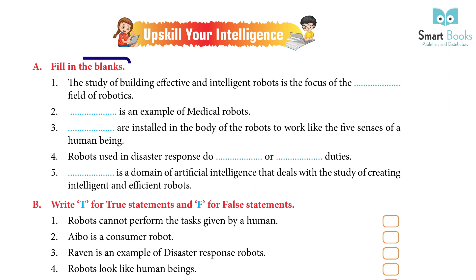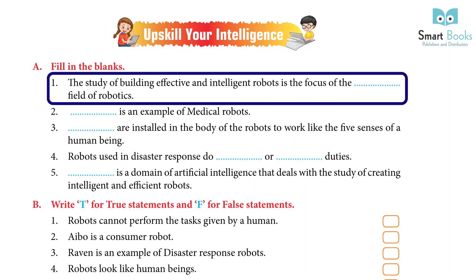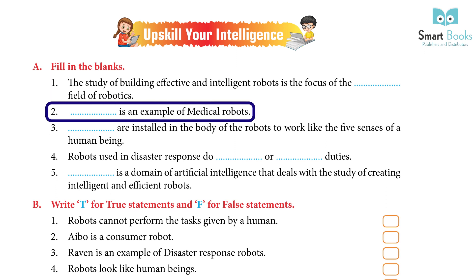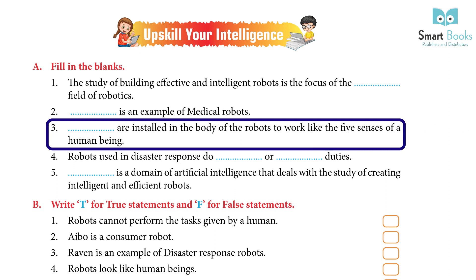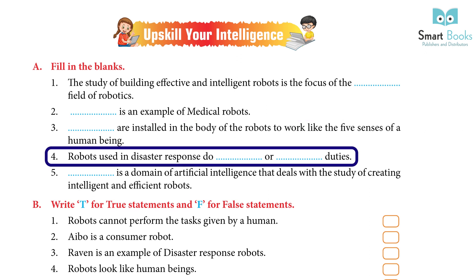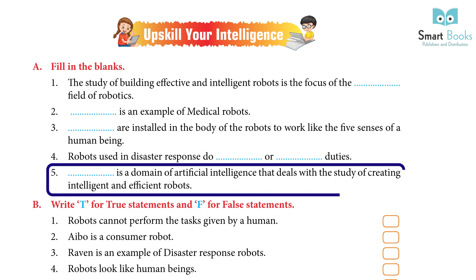Upskill your intelligence — Fill in the blanks: 1. The study of building effective and intelligent robots is the focus of the Artificial Intelligence field of robotics. 2. Bionic prosthesis is an example of medical robots. 3. Sensors are installed in the body of robots to work like the five senses of a human being. 4. Robots used in disaster response do hazardous duties. 5. Robotics is a domain of artificial intelligence that deals with the study of creating intelligent and efficient robots.